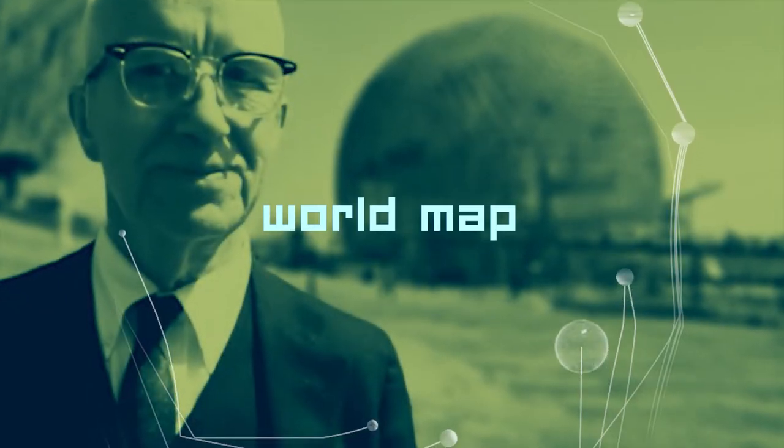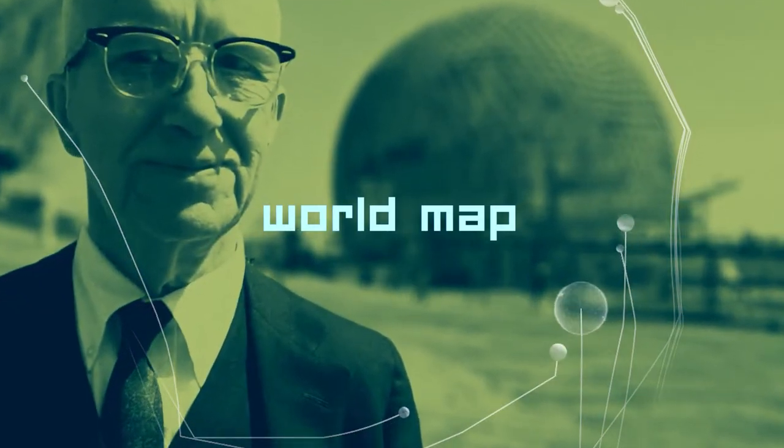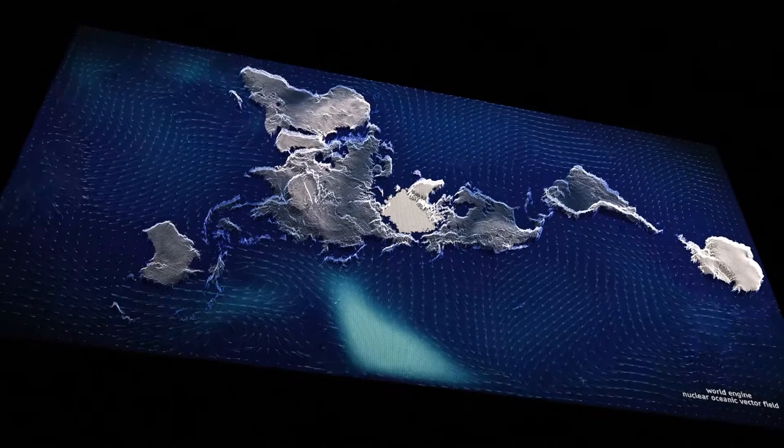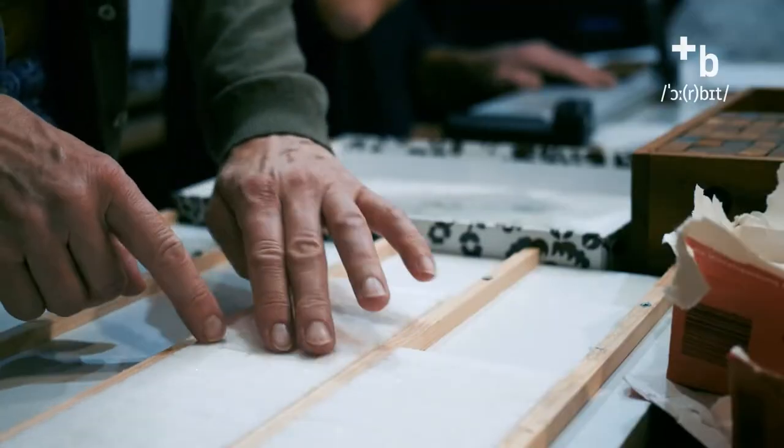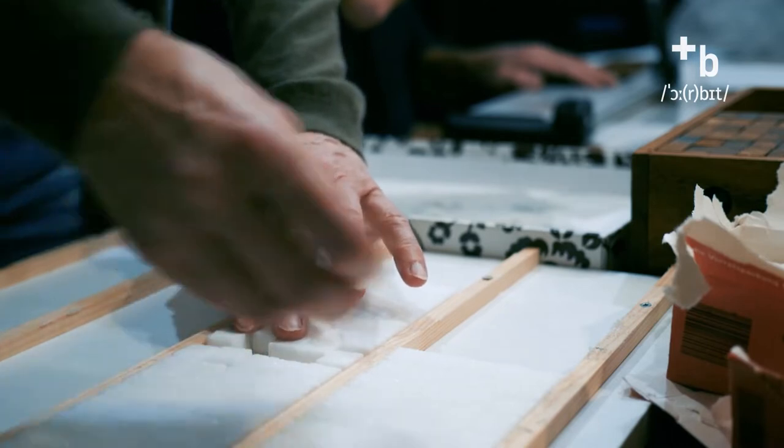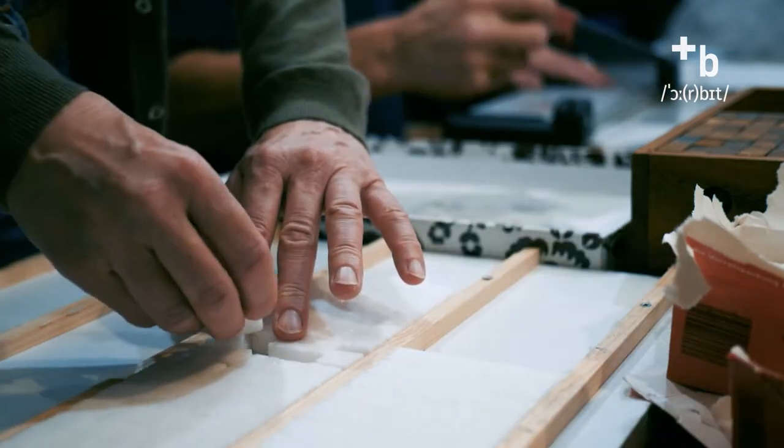The Dymaxion map is the only flat representation of the entire surface of the Earth that reveals our planet as one continent and one ocean, without any obvious distortions of the shapes and sizes of the land areas and without splitting any continents. It was developed in the year 1943 by Richard Buckminster Fuller.